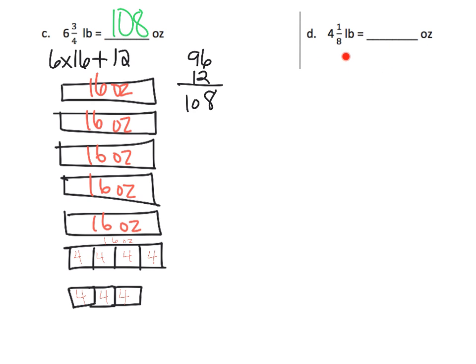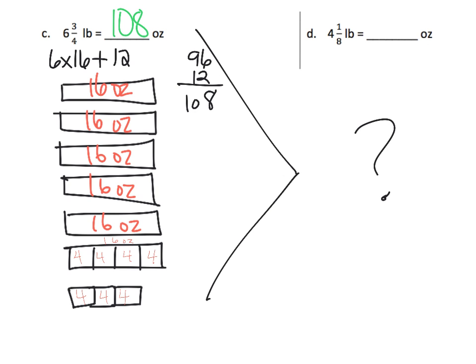This next problem is basically the same. We're going to figure out how many ounces four and an eighth pounds is — use the previous example as your guide for doing that one.